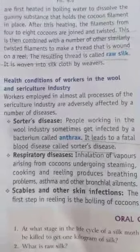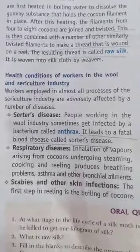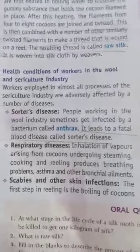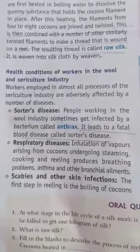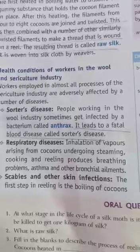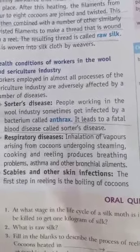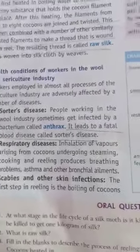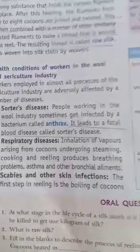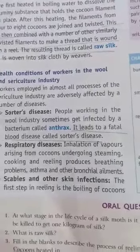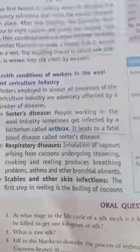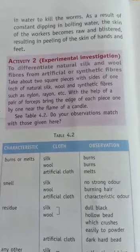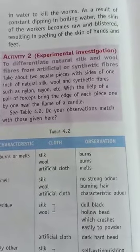Let us learn about the health condition of workers in the wool and sericulture industry. Workers employed in almost all processes of the sericulture industry are adversely affected by a number of diseases. First is Sorter's disease: people working in the wool industry sometimes get infected by a bacterium called anthrax, which leads to a fatal blood disease called Sorter's disease. Second is respiratory disease: inhalation of vapors arising from cocoons undergoing steaming, cooking, and reeling produces breathing problems, asthma, and other bronchial ailments. Third is scabies and other skin infections: the first step in reeling is boiling cocoons in water to kill the worms, and as a result of constant dipping in boiling water, the skin of workers becomes raw and blistered, resulting in peeling of the skin of hands and feet.